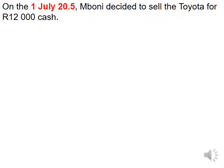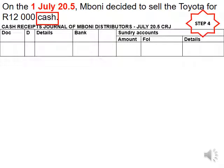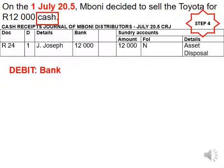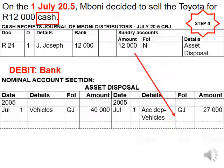Step number 4 is to record the selling price. It was sold for cash, which means it will be recorded in the cash receipt journal. On day 1 of July, we received $12,000 from J. Joseph, and the reason for receiving the money is asset disposal. Since we received money, bank will be debited and the asset disposal account will be credited via the cash receipt journal. Step number 4 is done and dusted.